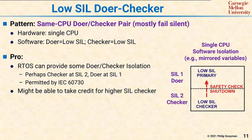There are some cons for this. First, it requires a doer-checker isolation argument, just as we saw with the previous software isolation pattern. Alternatively, the doer and the checker need to be at the same higher SIL, which gets rid of a lot of the advantage of this approach.